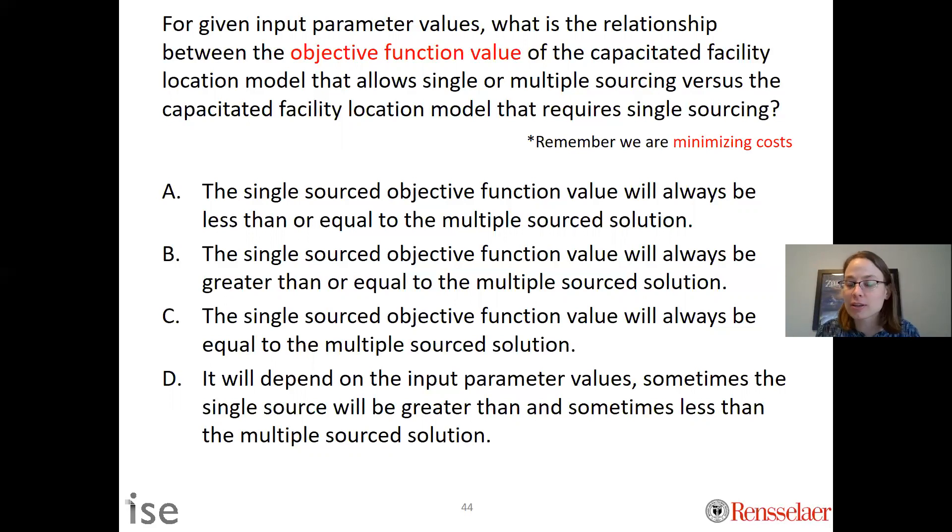Why? The reason you could say that is that the single source problem is feasible to the one that could be either single or multiple; however, the reverse is not true. What I mean is if the optimal solution is to have two sources, so you are supplying a demand point from two points or more, that's no longer feasible to the single source one, which means you will have to get a worse objective function.